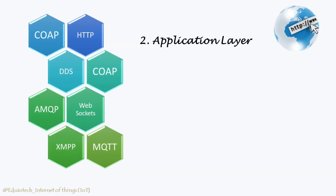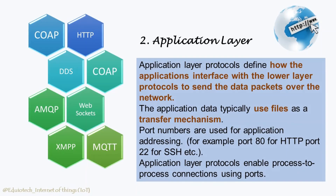Application layer protocols define how the applications interface with the lower layer protocols to send data packets over the network. The application data typically uses files as a transfer mechanism. Files are encoded by the application layer protocol and encapsulated in the transport layer protocol, which provides connection or transaction-oriented communication over the network. Port numbers are used for application addressing — for example, port 80 for HTTP and port 22 for SSH. Application layer protocols enable process-to-process connections using ports.